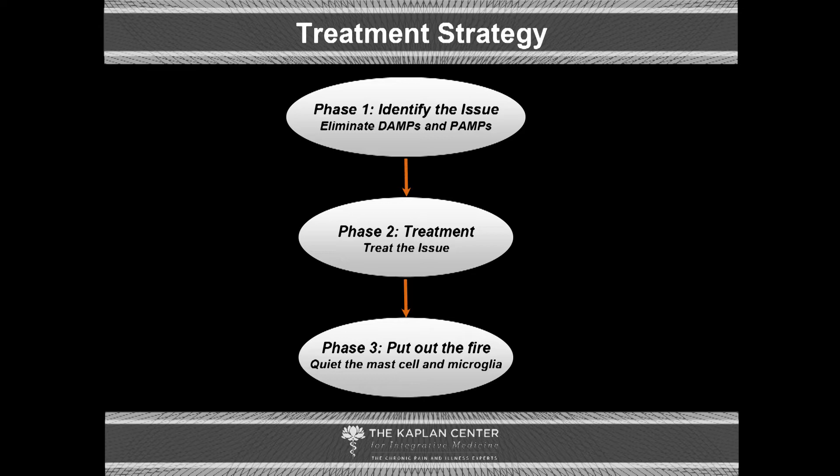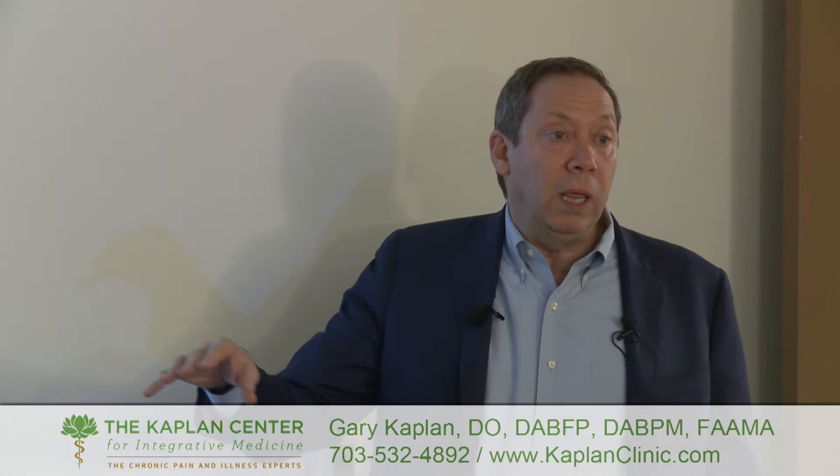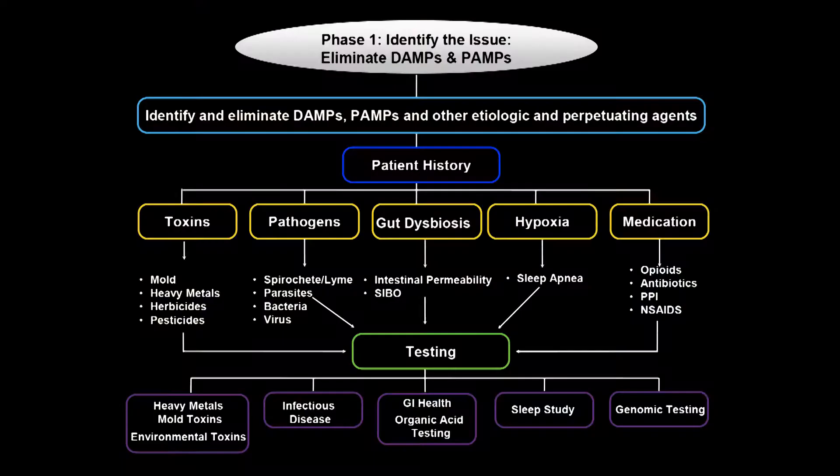Phase one is identify the issues — the DAMPs and the PAMPs. Phase two is treat it. Phase three is put the fire out, because once these cells are upregulated they will stay upregulated for extended periods of time. The older you are, the longer it's been in the system, the longer it stays upregulated, and the more work we have to do.